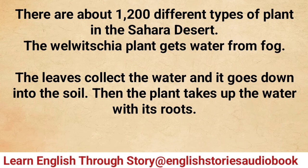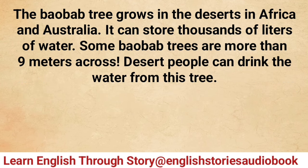The welwitschia plant gets water from fog. The leaves collect the water and it goes down into the soil, then the plant takes up the water with its roots. The baobab tree grows in the deserts in Africa and Australia. It can store thousands of liters of water.